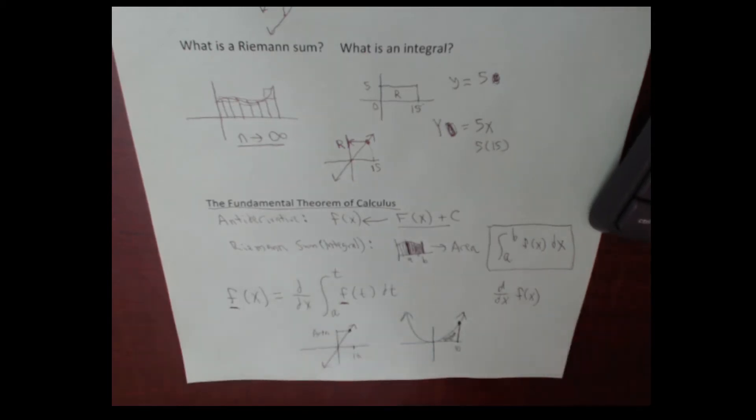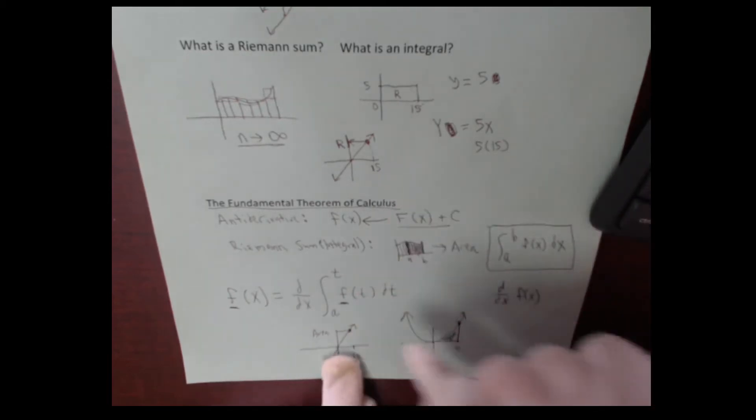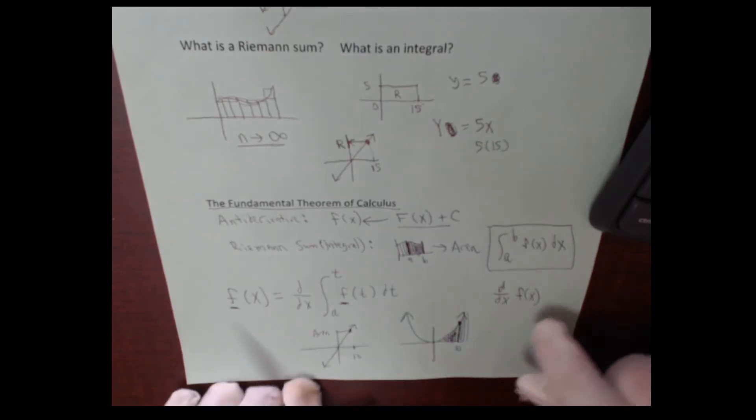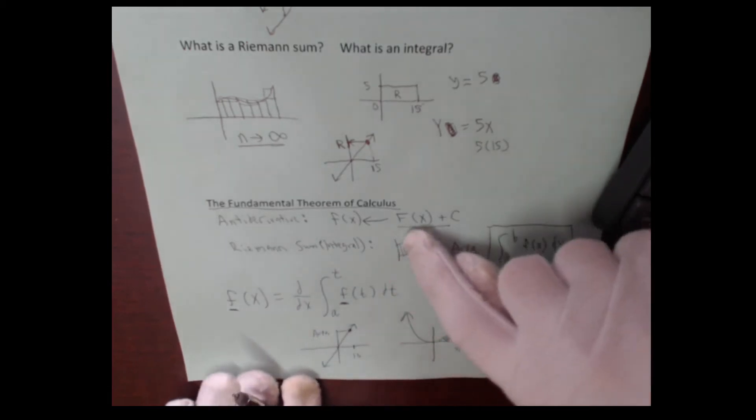And hopefully it would kind of make sense that slope and area would be linked to each other. The steeper this slope is, the higher our derivative, which means we're generating more area. Notice that as I move to the right, this line gets bigger and bigger. So we're adding more area faster and faster.